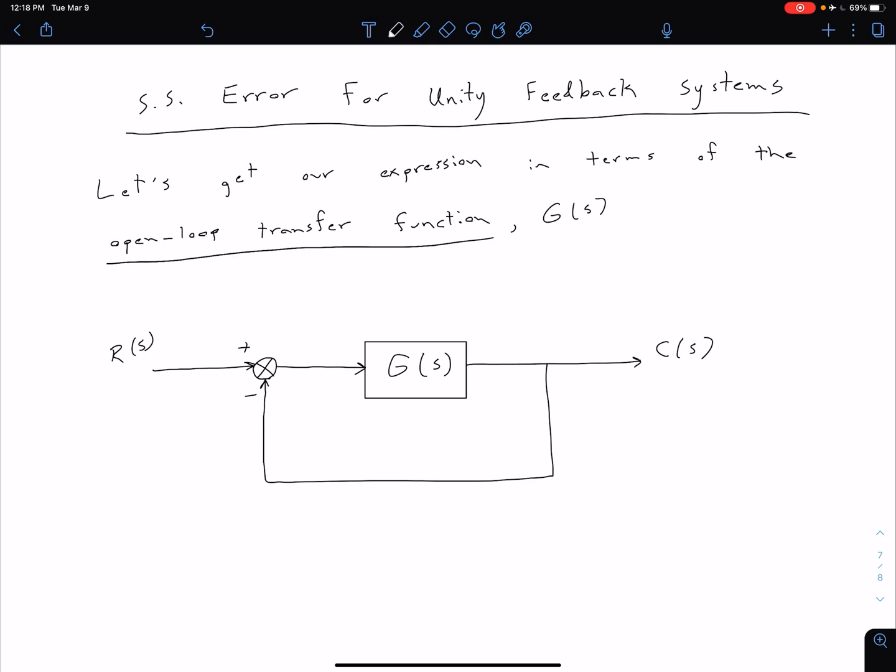Ultimately, we're going to see in later videos why it's useful to have that expression for steady-state error in terms of our G of S. But for now, let's just go ahead and find what that is. First, let's add some notation to this diagram. We have our R of S and C of S labeled.